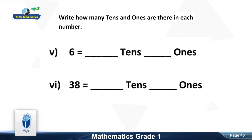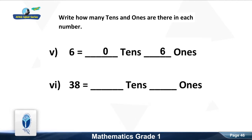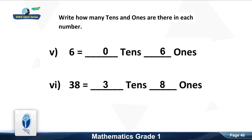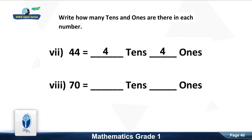How many tens in six? Good, zero tens. How many ones in six? Good, six ones. How many tens in thirty-eight? Good, three tens. Ones? Good, eight ones. How many tens in forty-four? Good, four tens. How many ones? Good, four ones.